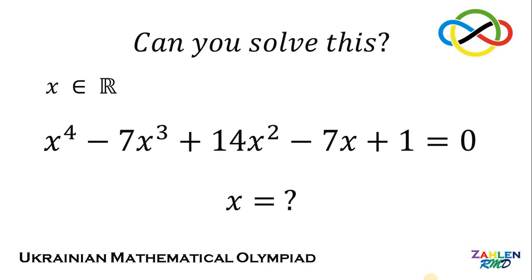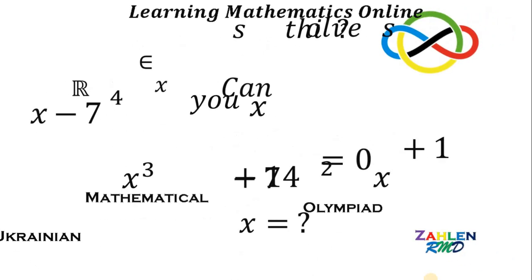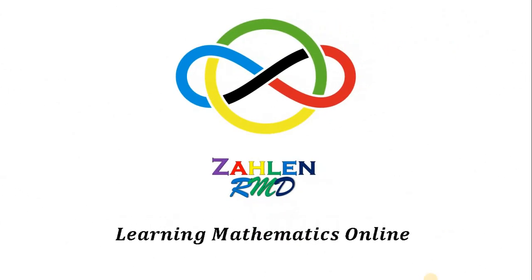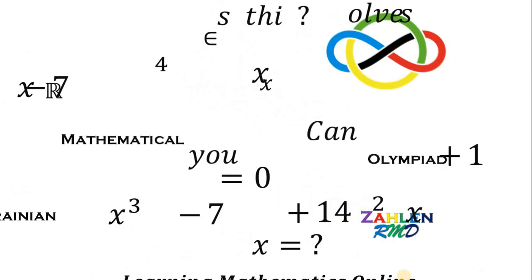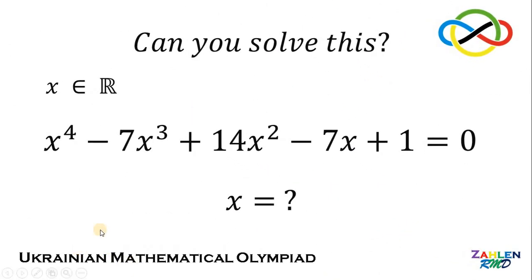Good day everyone. Here's our math challenge for today. This question is from the Ukrainian Mathematical Olympiad. Solve for all real values of x in this equation: x to the fourth minus 7x cubed plus 14x squared minus 7x plus 1 equals 0.